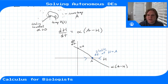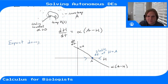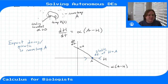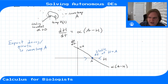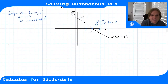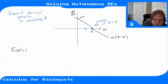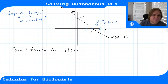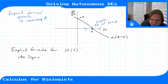So we expect either decay or growth to room temperature — that's what we expect from the solutions. But we don't really know what those solutions look like just from the phase line diagram. So let's find an explicit formula for the temperature as a function of time, h(t), using separation of variables, just like in the last video.